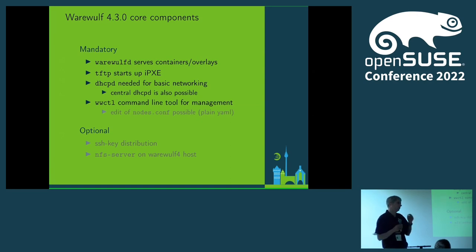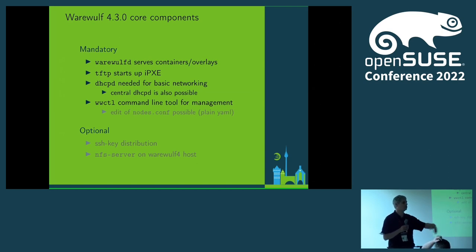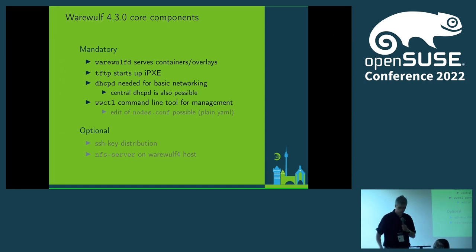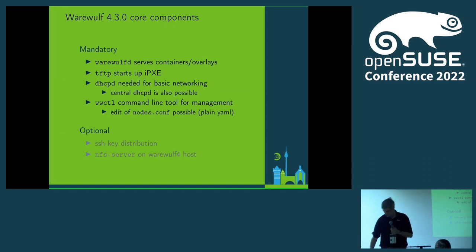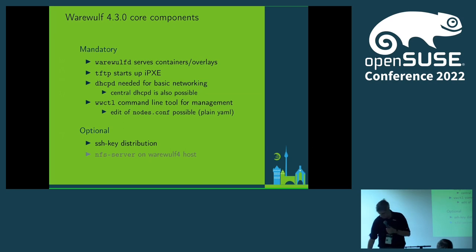You also have another binary — just one binary — where you interact with the node database and say: there's a new node, I want this operating system on it, it has this many network interfaces, I want to assign this IP address. You can also directly edit the database because it's a simple YAML file. If you do that while someone else uses wwctl, you're kind of asking for trouble, but there will be a warning added. Optionally, we can also deploy SSH keys — most likely the root SSH key to all nodes — so you can immediately log in. The NFS server can also be configured on the master host level.